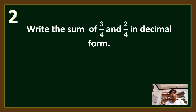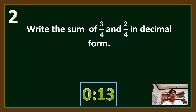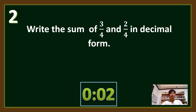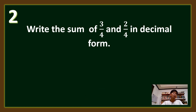Question number 2. Write the sum of 3 fourths and 2 fourths in decimal form. The answer is 1.25 or 1 and 25 hundredths.